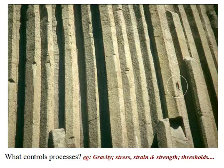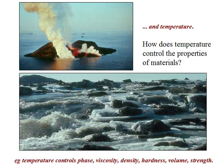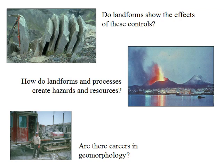For example, to understand how an object on a hill slope will behave — whether it's a pebble in a flash flood or a climber on a rock face — we need to think in terms of things like gravity, shear stress, resistance, and thresholds. The relationship between these factors is often controlled by environmental conditions like temperature. We'll need to explore how those conditions affect materials and processes. Our goal is to understand how landforms and geomorphic processes reflect the impact of these controls, and to put that understanding to good use.